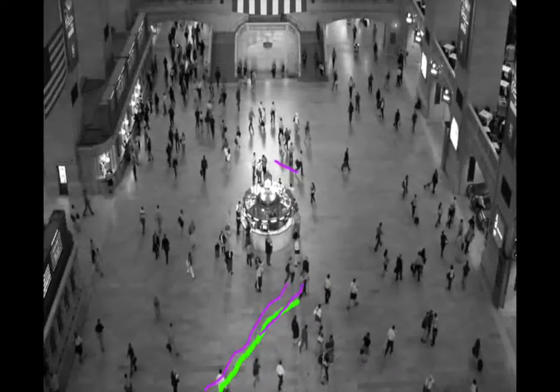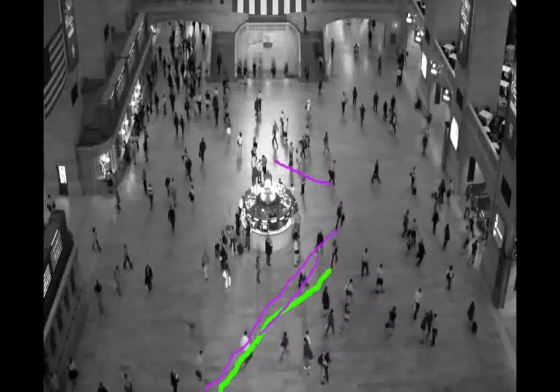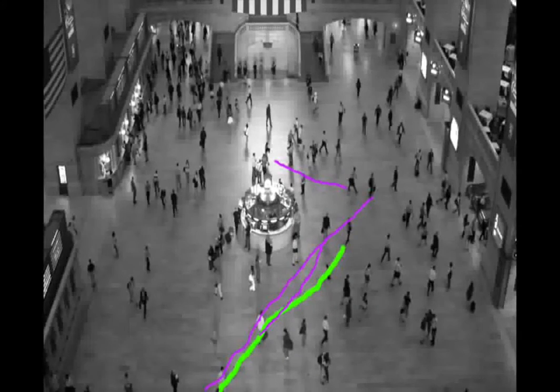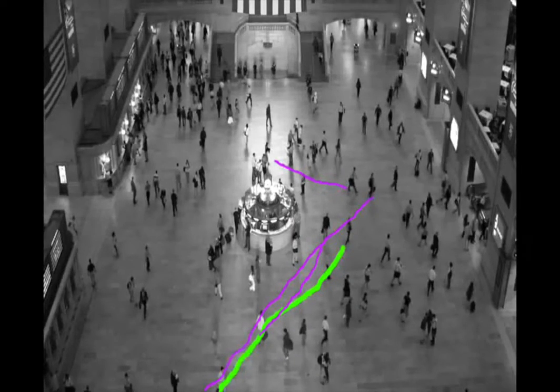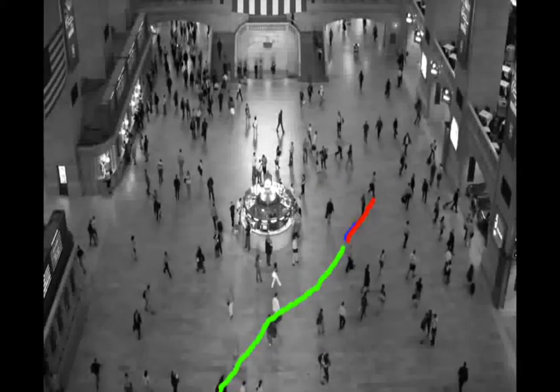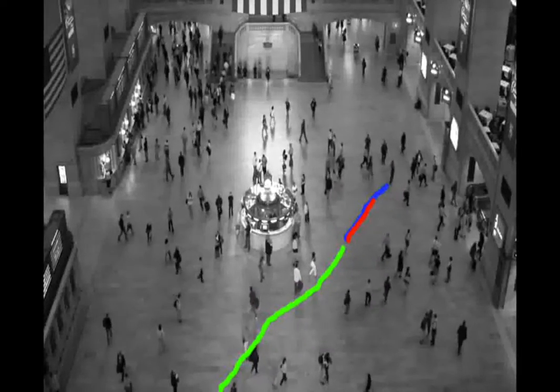But in the baseline model, the hidden states are dominated by the walking behavior as it is the most recent behavior. Therefore, the predictions generated by the baseline model is erroneous.